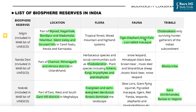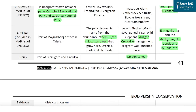The Simlipal Biosphere Reserve, which is in the news, is included in the UNESCO Man and Biosphere programme. It is part of the Mayurbhanj district in Odisha and derives its name from the abundance of Semul or red silk cotton trees. Other flora includes orchids and medicinal plants. Fauna includes the Asiatic elephant, gaur, Royal Bengal tiger, wild elephant, and mugger crocodile. The tribes living in Simlipal include the Rengna Kharias, Mankidias, Ho Gonda, and Munda tribes.